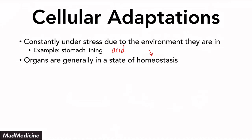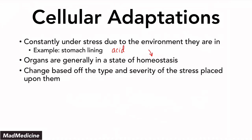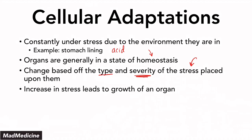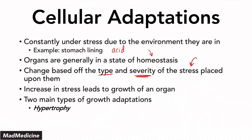The change that occurs is based on the type and the severity of the stress placed upon the cell and the organ. An increase in the stress put upon our body leads to the growth of an organ. There are two main types of growth adaptations you should be aware of: hypertrophy and hyperplasia. Let's discuss hypertrophy.